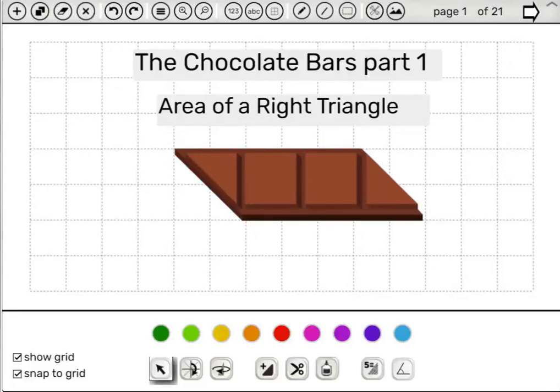Welcome to the lesson, The Chocolate Bars, Part 1. The goal of the lesson is to introduce the formula for calculating the area of a right triangle.